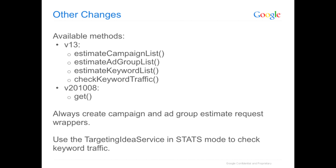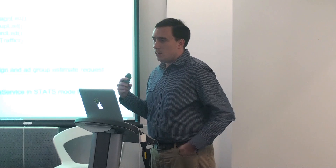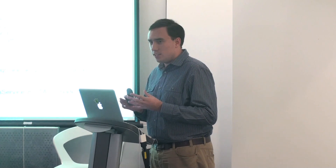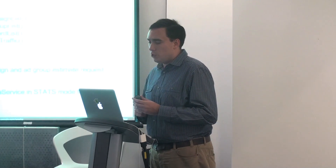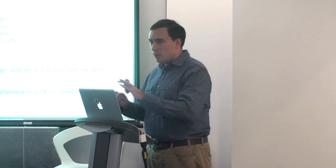There are some other important changes to touch on. In v13, there were four different methods in the traffic estimator service. What I demonstrated before in the v13 request was 'estimate campaign list,' where you pass in a series of campaigns wrapped in ad groups wrapped in keywords — providing full contextual information. v13 also included shortcuts where you could say you don't want to provide campaign targeting or ad group bid information — just give me the most generic raw data about how this keyword would perform. So you could call 'estimate keyword list' without passing in all those extra wrapping layers.